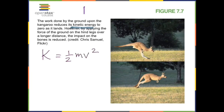Another kind of energy possessed by anything that moves is called kinetic energy. This kangaroo has kinetic energy. Water flowing in a river has kinetic energy. A moving car — anything that moves has kinetic energy. Kinetic energy is given by the formula one-half times mass times velocity squared.